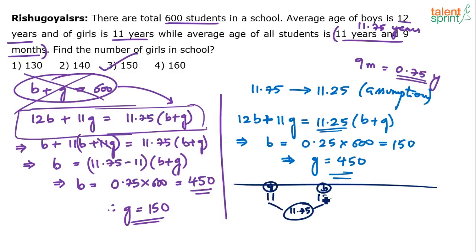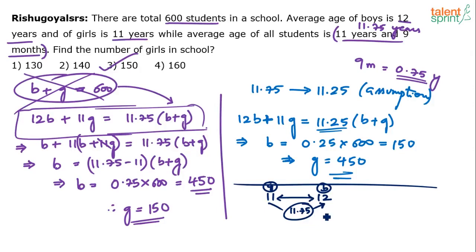Girls is 11, boys is 12, average is 11.75. 11.75 is closer to boys. Looking at the distance of one unit from 11 to 12, the point 11.75 sits 75% of the way towards the boys' side — so it is 75 percentage towards boys.